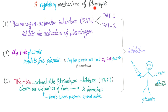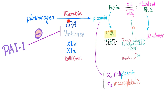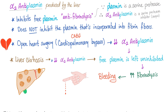Here are the three regulatory mechanisms of fibrin lysis — quick summary. Who inhibits TPA or urokinase? Plasminogen activator inhibitor. Who inhibits the free plasmin? Alpha-2 antiplasmin. Who inhibits the process of degradation? Thrombin activatable fibrin lysis inhibitor. Alpha-2 antiplasmin is an active protein, so it's probably produced by the liver. It inhibits the free plasmin — that's why alpha-2 antiplasmin is anti-fibrin lysis. Since plasmin is a serine protease, alpha-2 antiplasmin is a serine protease inhibitor. Remember what we call serine protease inhibitors? We call them serpins. Alpha-2 antiplasmin does not inhibit the plasmin that's incorporated into fibrin fibers.